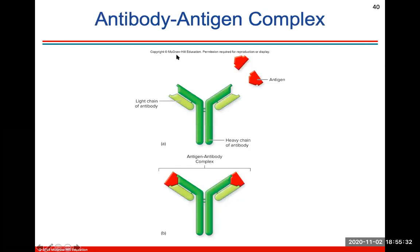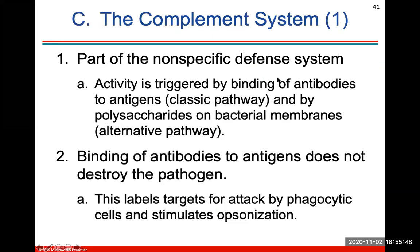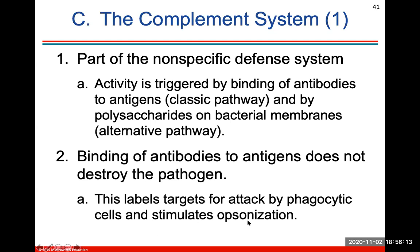The antibody-antigen complex has a heavy chain and a light chain, and they come together to form a specific receptor area for an antigen that will bind to it — every antibody is specific for a particular antigen. The complement system is part of the nonspecific defense system. Its activity is triggered by binding of antibodies to antigens and also by polysaccharides — chains of sugar on bacterial membranes. The binding of antibodies to antigens labels the target for attack by a different phagocytic cell to stimulate opsonization.